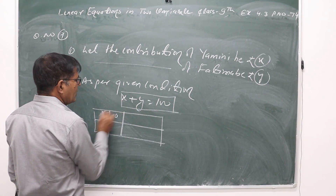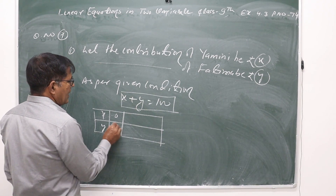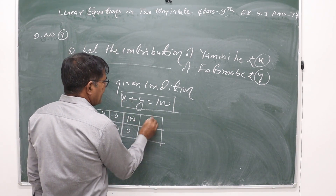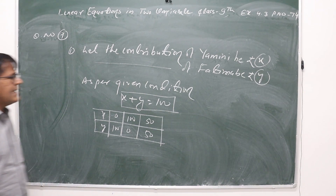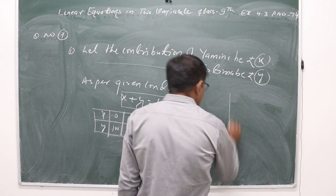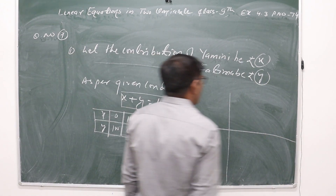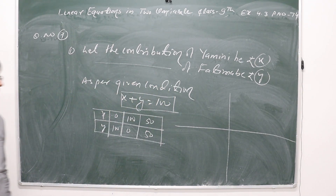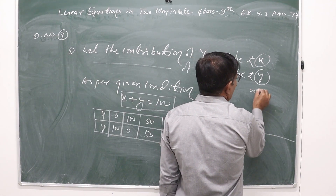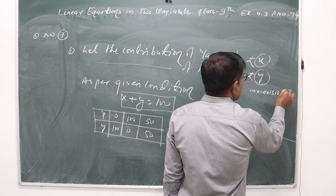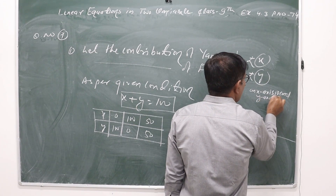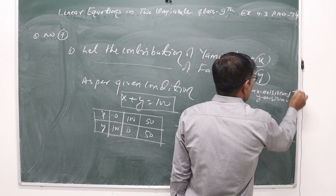Making a table: if x = 0 then y = 100; if y = 0 then x = 100; if x = 50 then y = 50. So we have three points. For the graphical representation, the solution values are a bit higher, so on scale we will take 1 cm = 10 units on both the x-axis and y-axis.